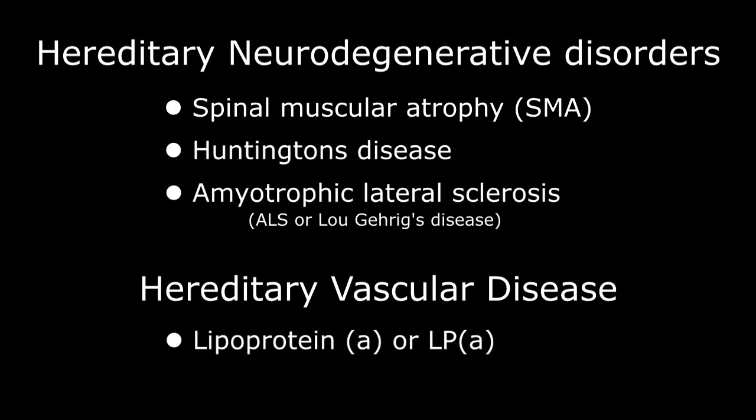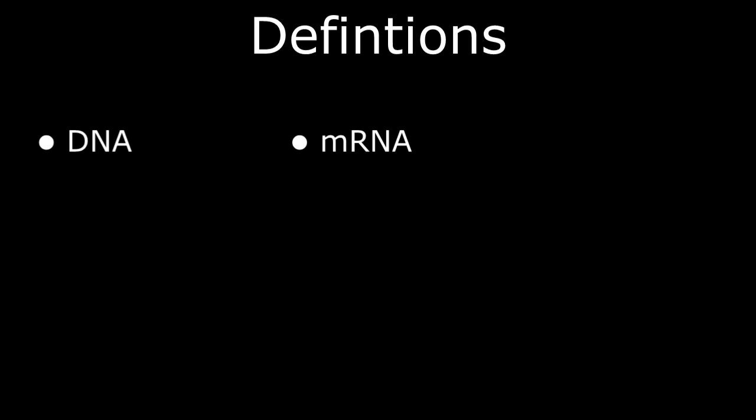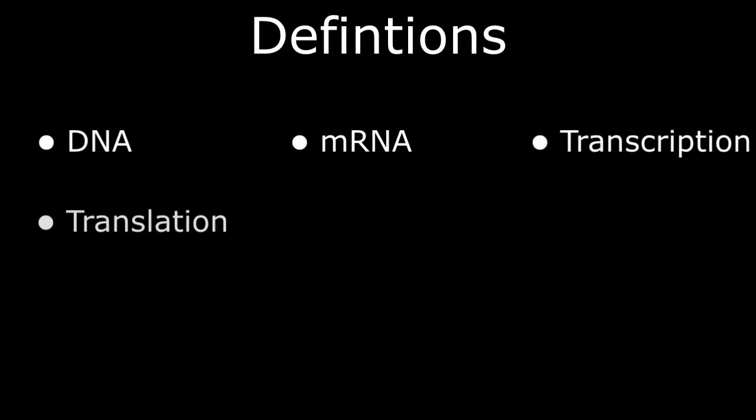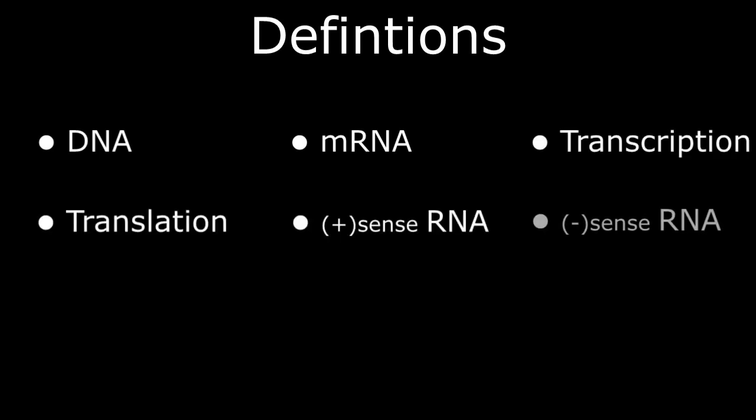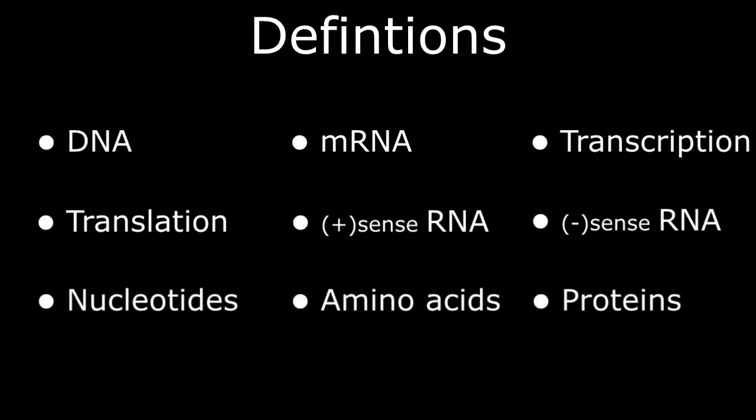Over the next few minutes, we're going to review the science behind ASOs and their potential role in the future of medicine. Before we get into the specifics of anti-sense oligonucleotides, we need to review a few definitions and some basic features of our own genetics, including DNA, mRNA, transcription, translation, positive-sense RNA, negative-sense RNA, nucleotides, amino acids, and proteins.